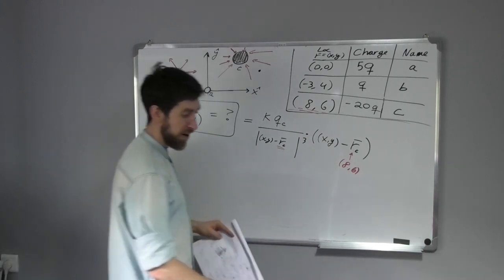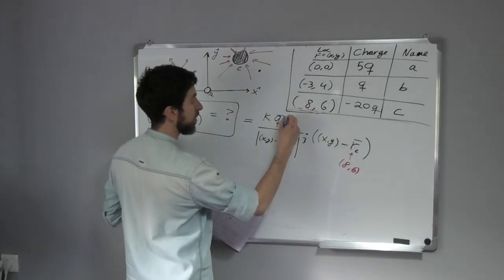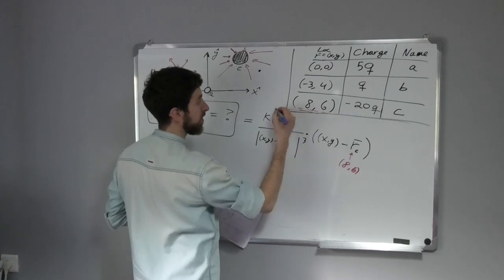So it's not that, simplify this. I can maybe put here what is the total Q. It's minus 20Q, right?